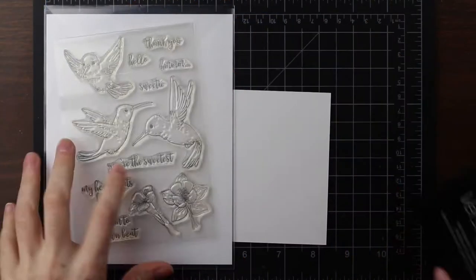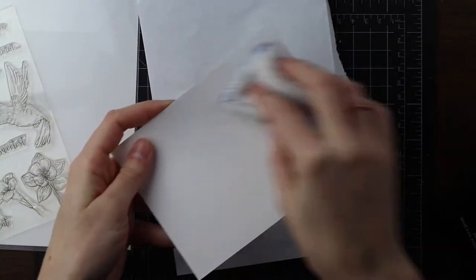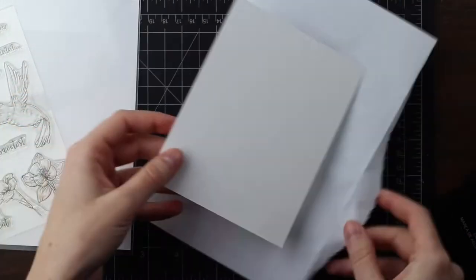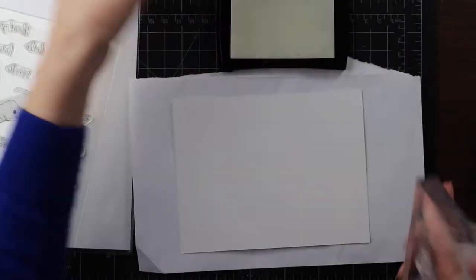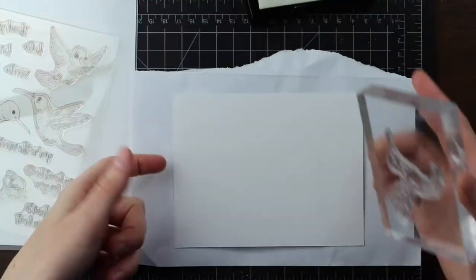The first thing I'm going to do is create the hummingbird scene. So I'm going to stamp the hummingbird and flower, Versamark, on some Bristol cardstock and then heat emboss that using the detail black embossing powder.